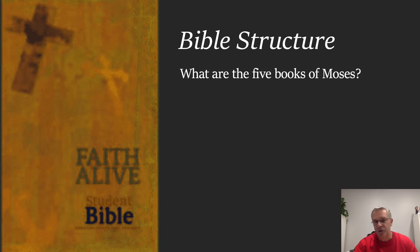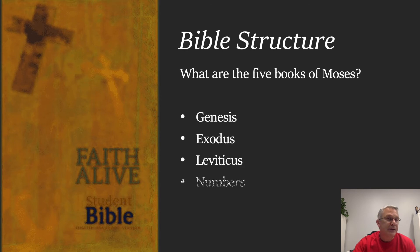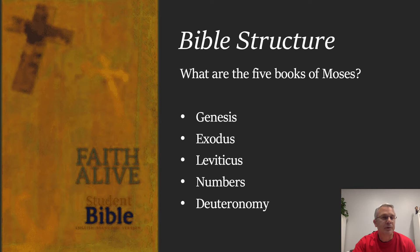The five books of Moses are the first five books of the Bible: Genesis, Exodus, Leviticus, Numbers, and Deuteronomy. We attribute those to Moses having written them. The Jewish people and their scriptures have always attributed those books to Moses.